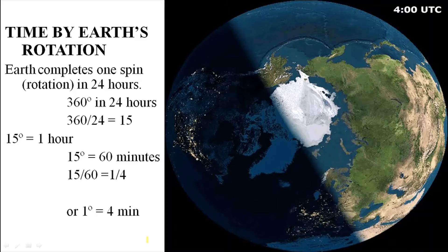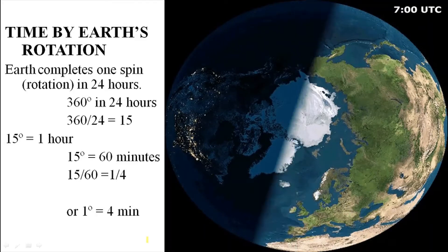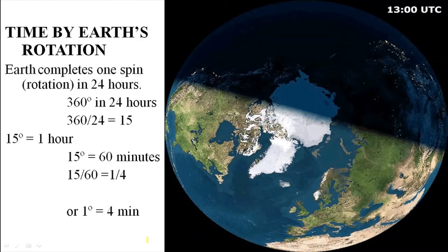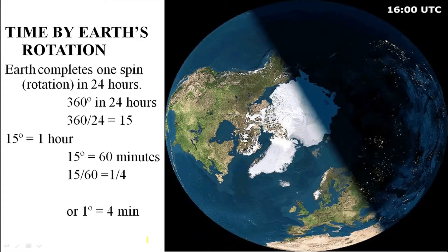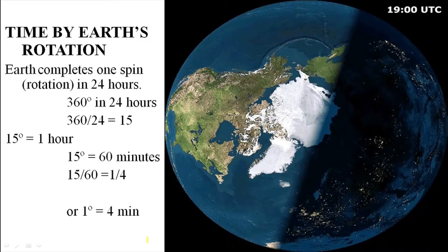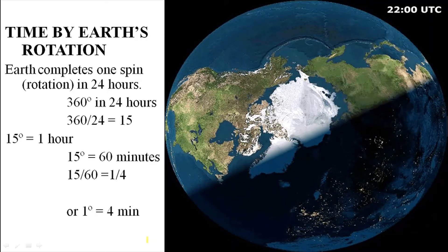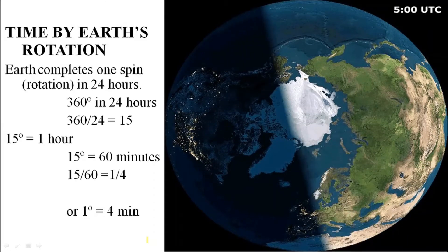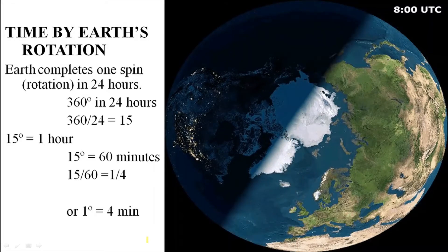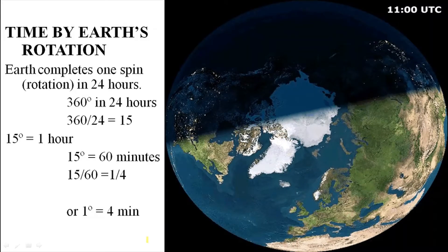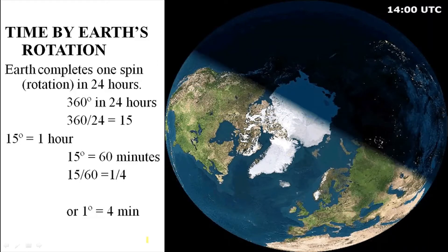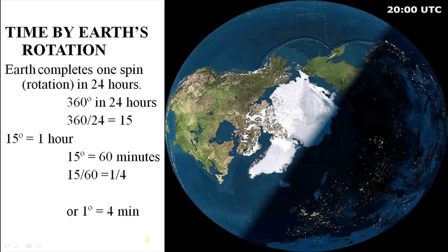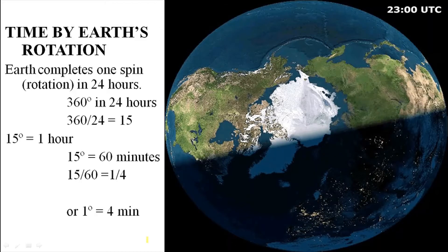On every 15 longitudes we will find a difference of 1 hour. So at a particular meridian, at a particular longitude line, we will have a different time. That is the local time of a place. We have different longitude lines, and on every longitude line we have different time — a difference of 4 minutes between 2 adjacent longitude lines, and 1 hour difference in every 15 degrees.